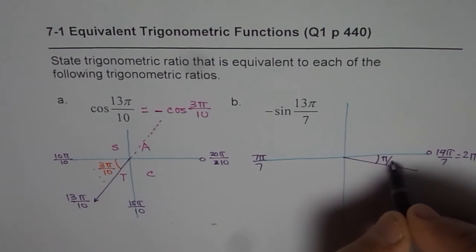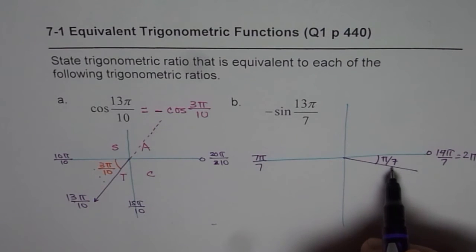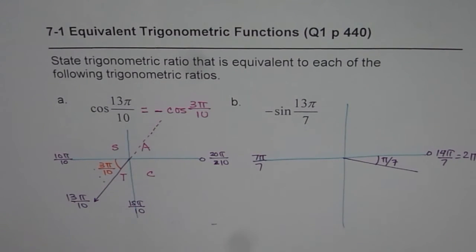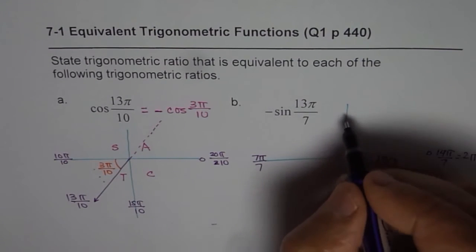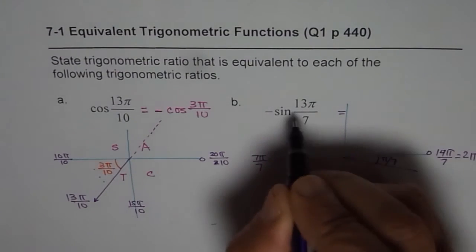π by 7 less, right? So the acute angle here is π by 7. Now, since sin is negative in this quadrant, so we are going to get a value which is negative. So we can write for this.